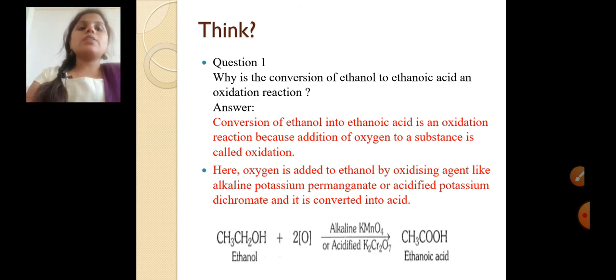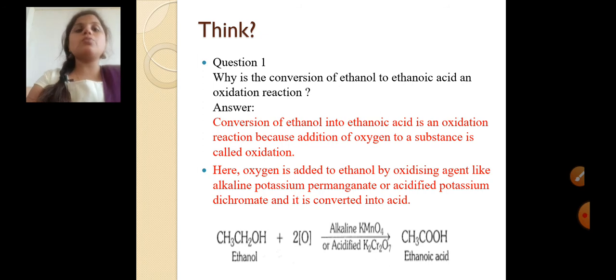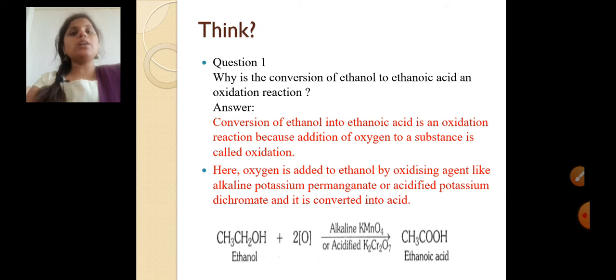To repeat this reaction: CH3CH2OH (or C2H5OH) plus two molecules of oxygen in the presence of alkaline KMnO4 or acidified K2Cr2O7 — two oxidizing agents are used here to convert ethanol into ethanoic acid.